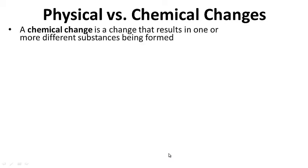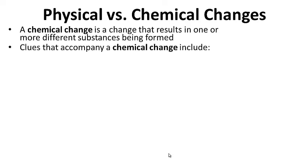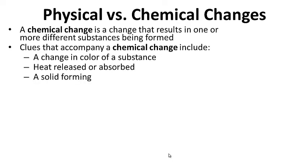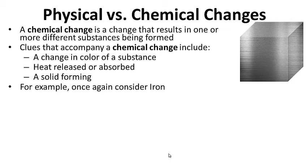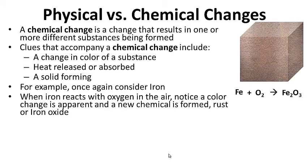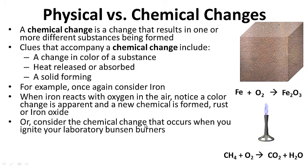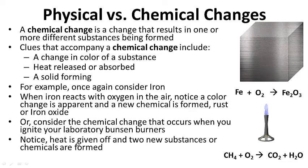A chemical change is a change that results in one or more new substances being formed. Clues that accompany a chemical change include: a change in color, heat released or absorbed, or a solid forming. For example, when iron reacts with oxygen in the air, a color change is apparent and rust forms — a brownish-red color. Or consider igniting a laboratory Bunsen burner: methane with oxygen makes CO₂ and water, and a flame and heat are produced. Those are good clues that a chemical change is occurring and new chemicals are forming.